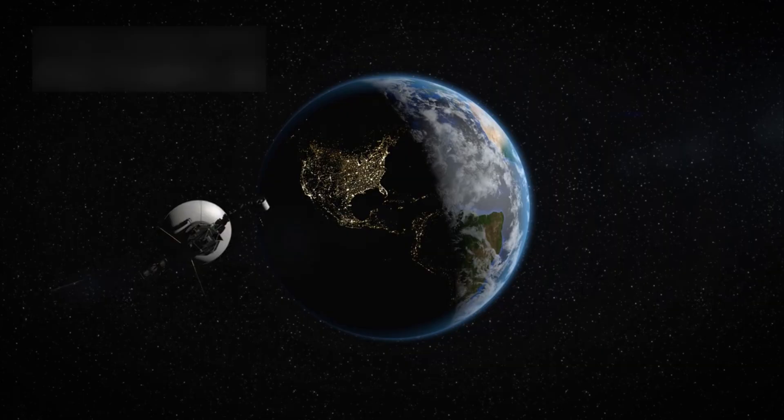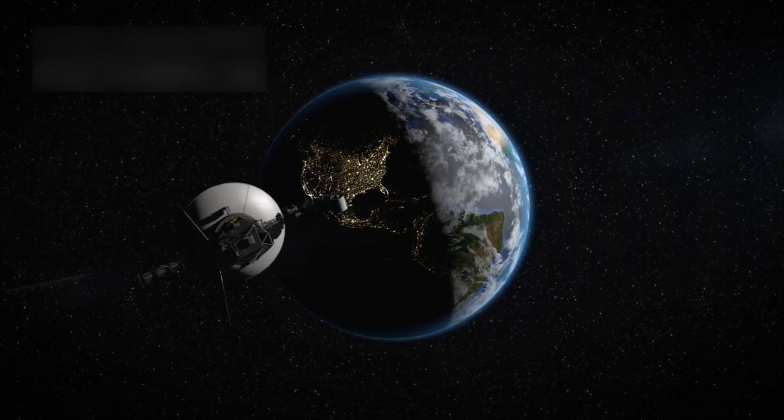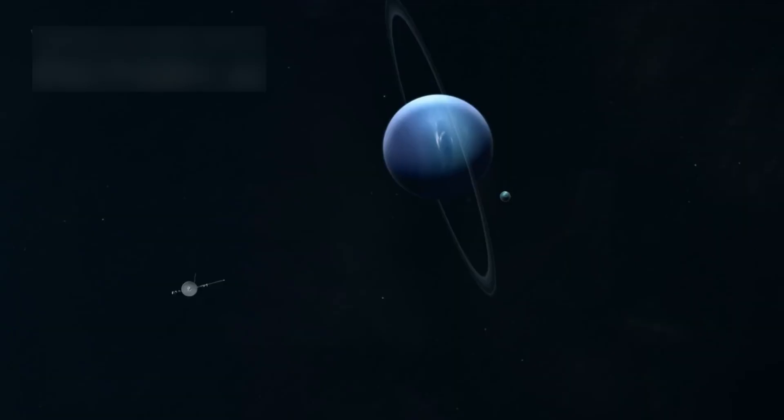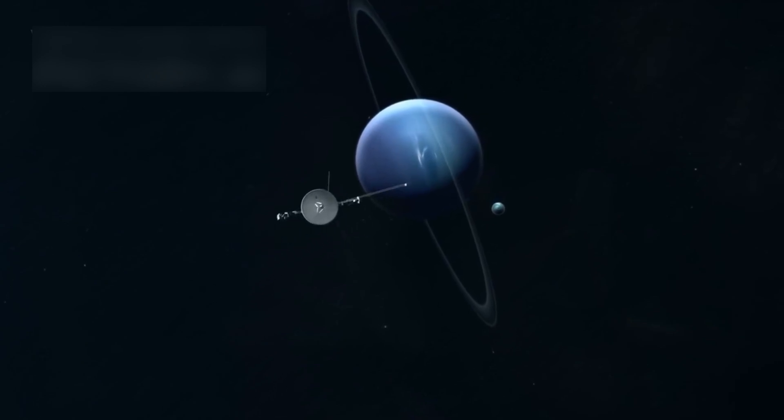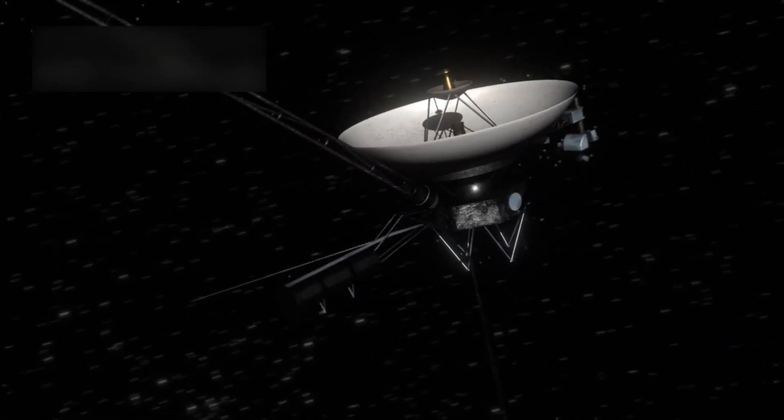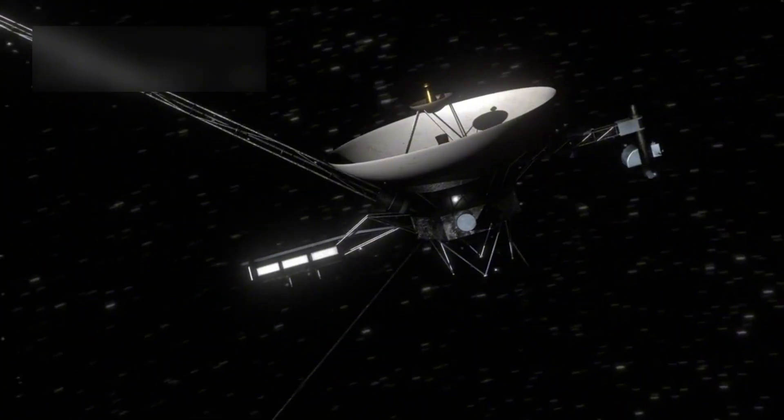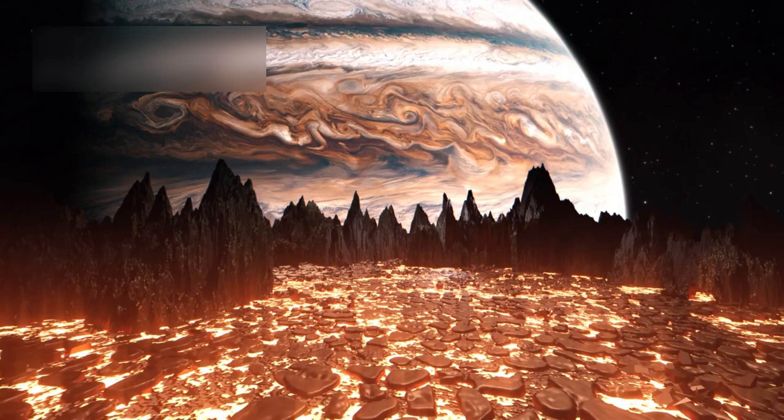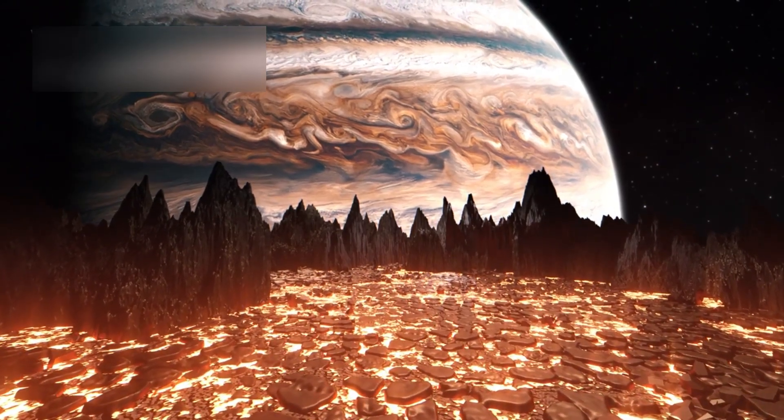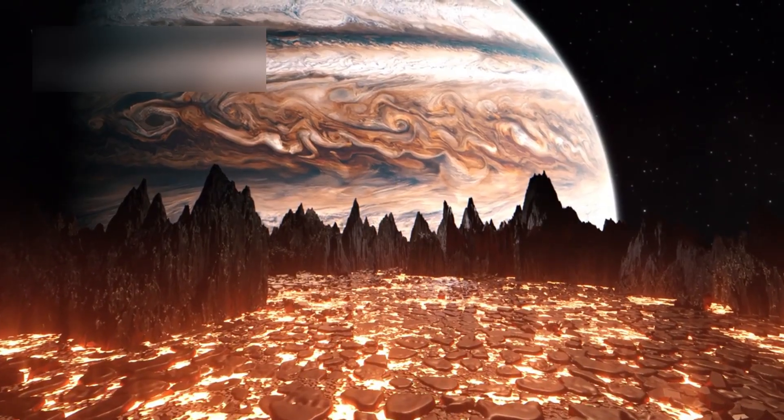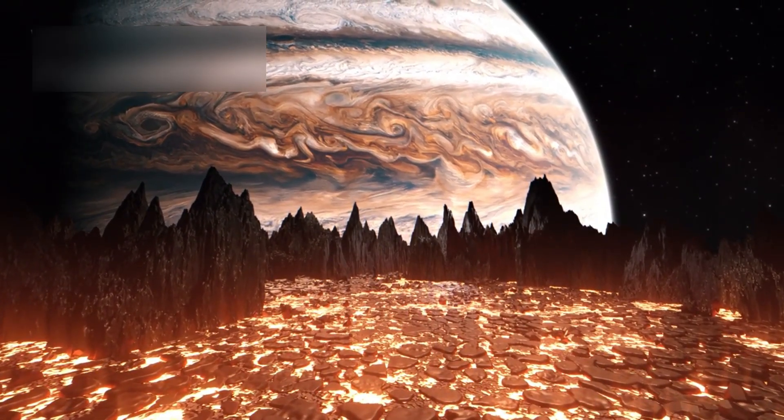Voyager 1, built with 1970s technology, went far beyond its original purpose. It became a pioneer, sending back stunning and detailed data of planets, their rings, and moons. Its close-up images of Jupiter's storms and Saturn's rings transformed how we see the outer solar system. It even discovered volcanic activity on Jupiter's moon Io, which was the first time active volcanoes were seen beyond Earth.